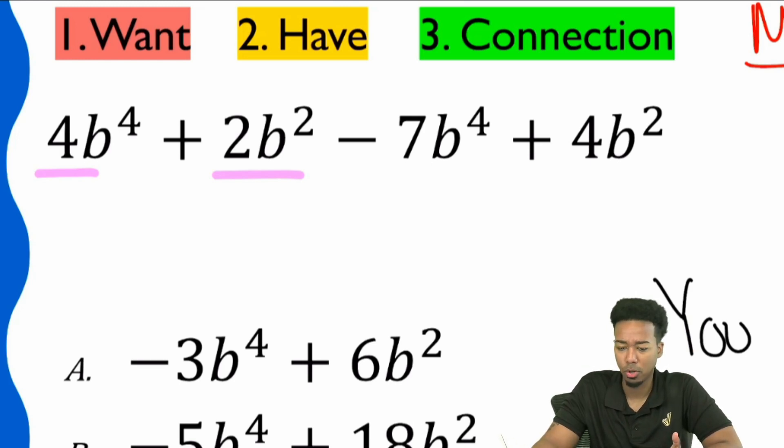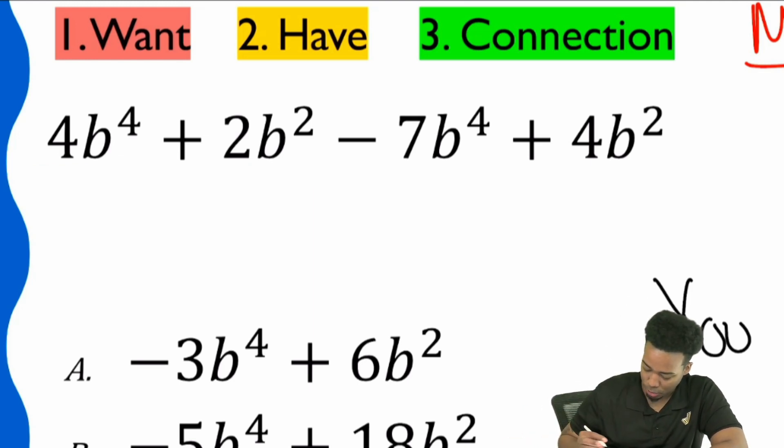You guys are saying no. I mean, I just told you, I told you the rules. We have B for both of them. Different exponents. Exactly. Different exponents. That is the problem. And so because of that, again, these are not like terms.